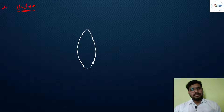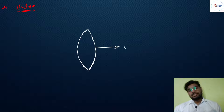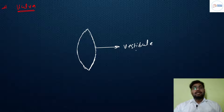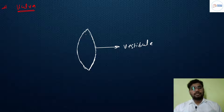This depression area is called the vestibule. Within this vestibule, there are two openings. The upper opening is called the urethral opening, also known as the urethral orifice.